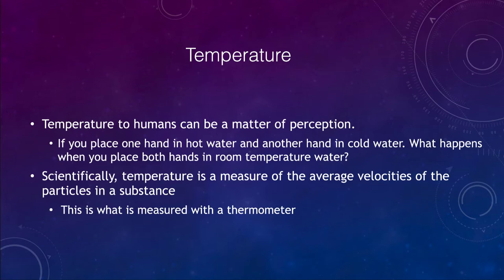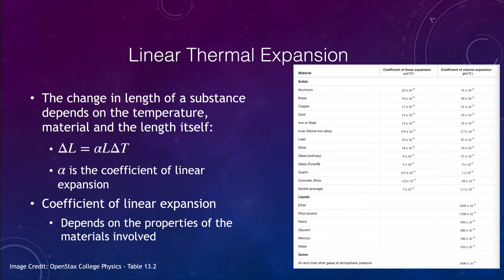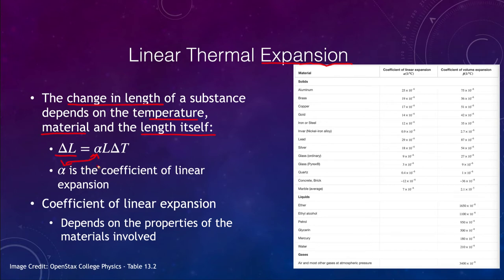Let's talk about expansion with temperature — what happens to materials when they are placed in hotter or colder environments. Things will undergo expansion or contraction when exposed to higher or lower temperatures. We can define the change in length: it depends on three things — the temperature change, the material, and the length itself. We write this as: the change in length equals alpha times the length times the change in temperature.